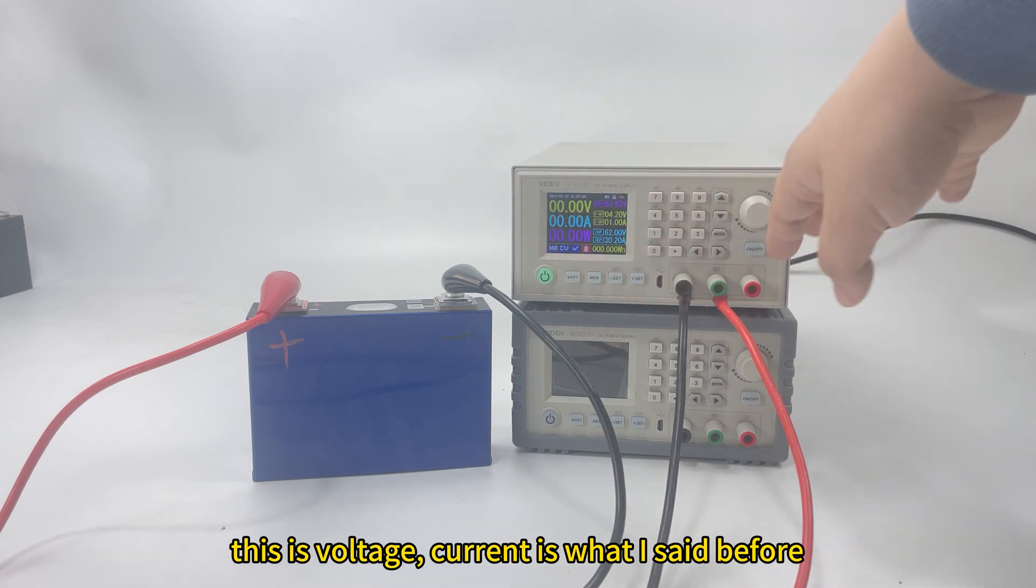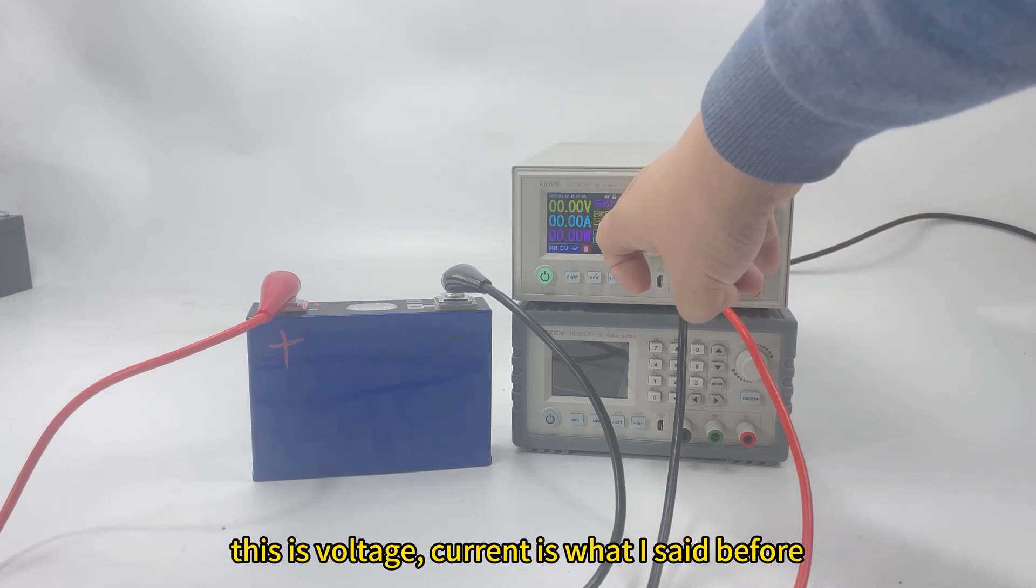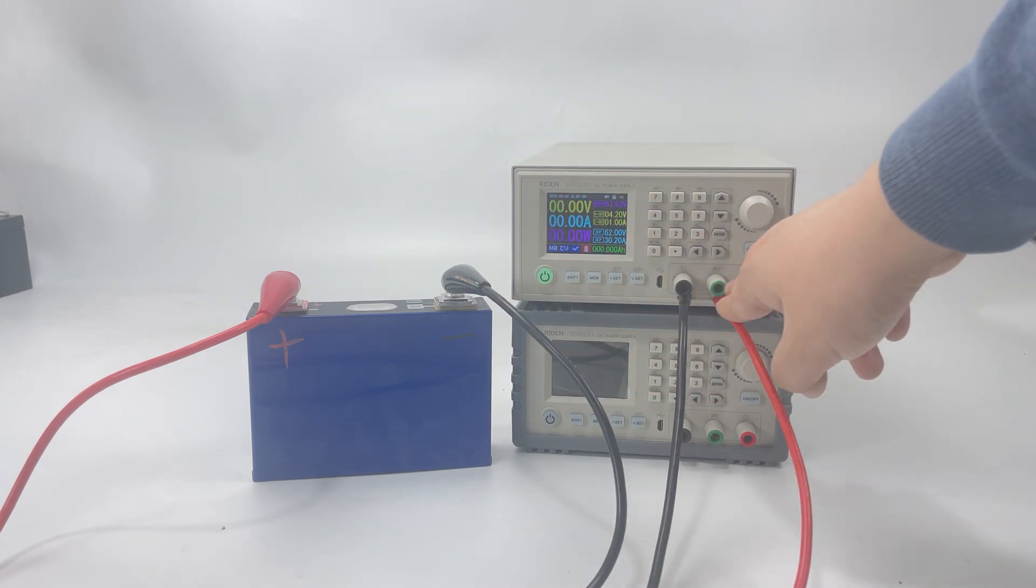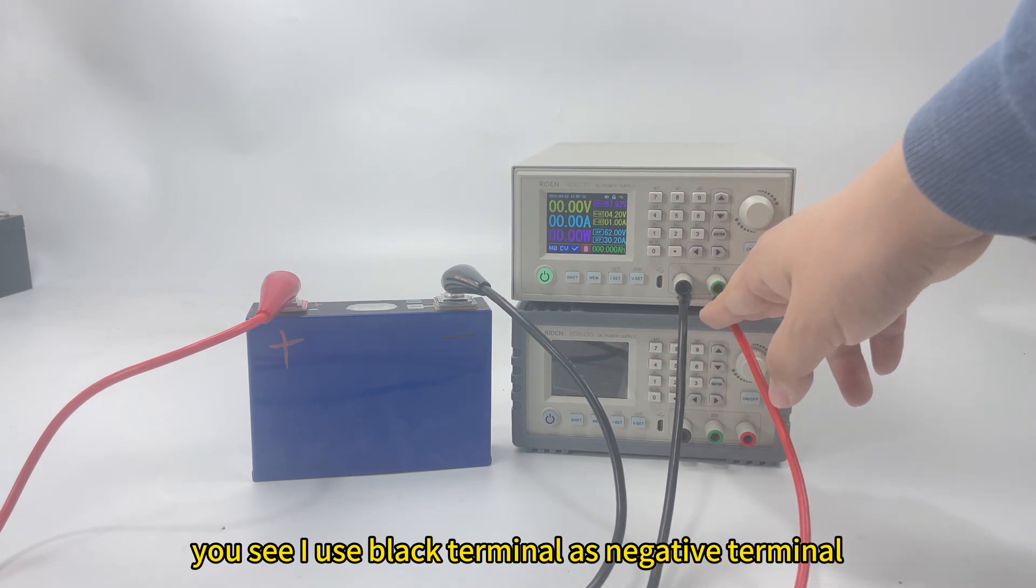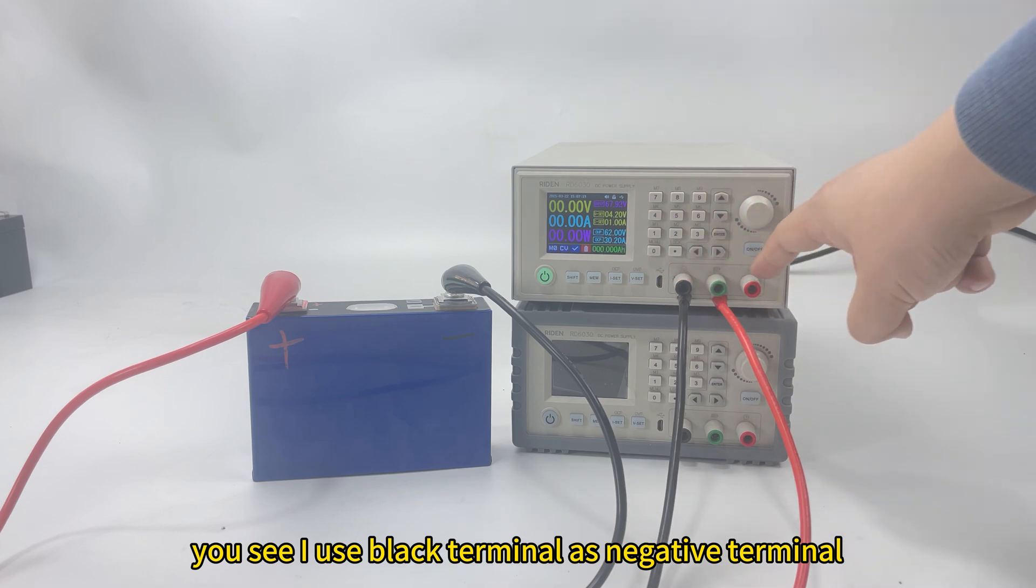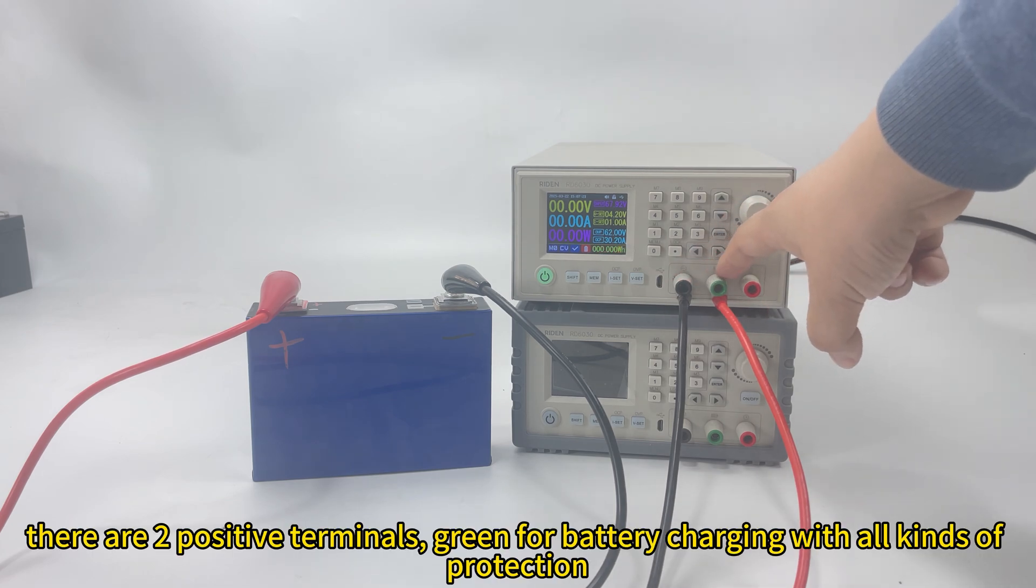This is the charging voltage and the current depends on the battery like I said before. Then for the terminals, you can see I use the black terminal as negative terminal. But for the output positive terminal, there are two positive terminals.